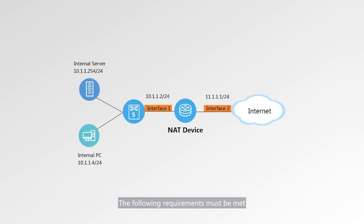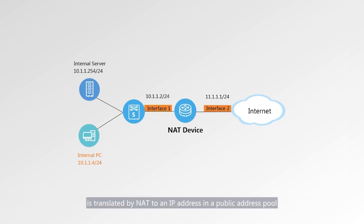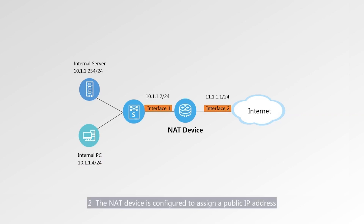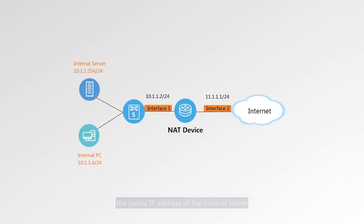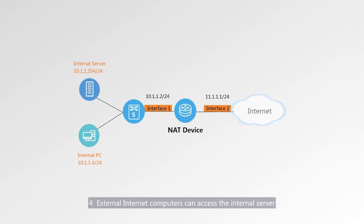The following requirements must be met. First, the internal computer's private IP address 10.1.1.4 is translated by NAT to an IP address in a public address pool before the computer accesses the internet. Second, the NAT device is configured to assign a public IP address to the internal server in Easy IP mode. Third, the computer with private IP address 10.1.1.4 sends an access request to the public IP address of the internal server, whose private IP address is 10.1.1.254. Fourth, external internet computers can access the internal server.